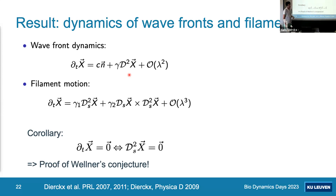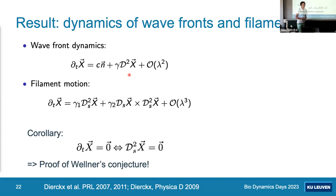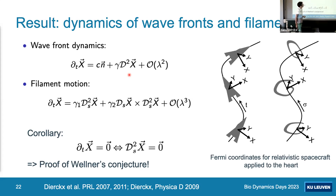This provided a proof of Wellner's conjecture: filaments are static only if they are geodesics of the space defined by the inverse diffusion tensor. To derive this equation, the team used Fermi coordinates — originally derived by Fermi in the 1920s for a relativistic spaceship traveling at great speed. While the spaceship has not been seen in 100 years, the coordinate system proved useful for describing filaments in the heart.